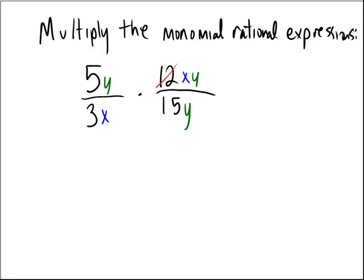So I'm going to cross out the 12 and the 15, and recall that 12 divided by 3 yields 4, and 15 divided by 3 yields 5. So on the top you would be left with a 4, and on the bottom you would be left with a 5.